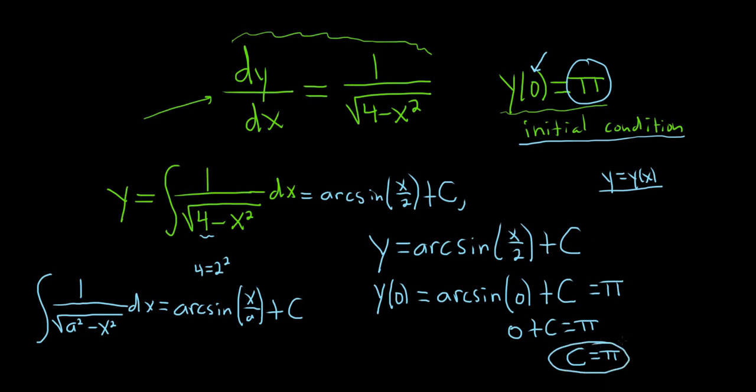So all you do now is take the C and plug it back in. So we have that y equals arc sine of x over 2 plus pi. And that would be the answer to the problem.